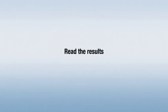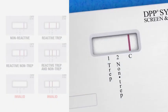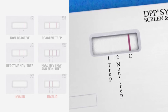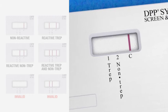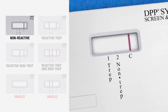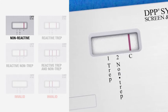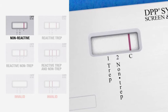Read the results. If no test line has formed above the markings 1 TREP or 2 NON-TREP in the test window, and if a reddish control line has formed above the C marking, the result is non-reactive, meaning that the sample contains no detectable antibodies to both treponemal and non-treponemal antigens. Be aware that this does not necessarily exclude syphilis infection.